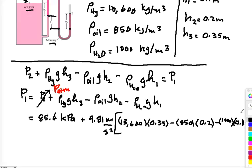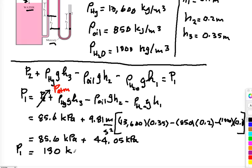And I will end up with 85.6 kilopascal, which is the atmospheric pressure, plus whatever the difference from point 2 until we reach the tank inside, which gives us 44.05 kilopascal. So the absolute pressure for the air inside the tank is 130 kilopascal.